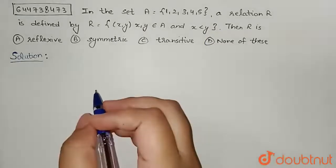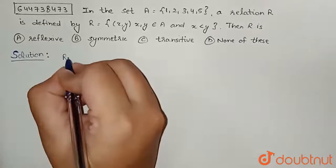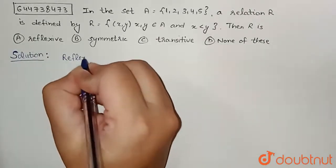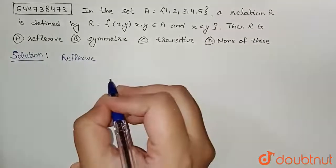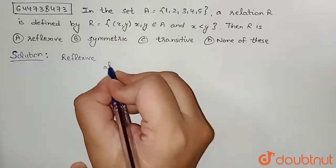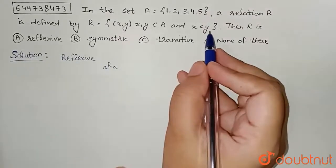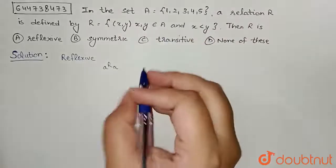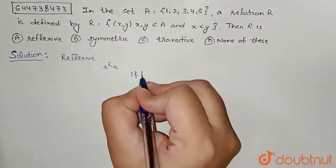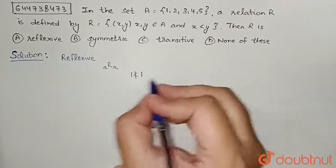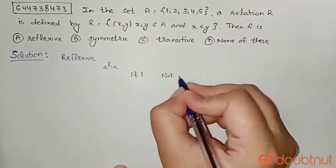So first of all, let's check for the reflexive property. For reflexive property, we have elements which are related to itself, but in this we can see that the condition is x less than y. So if we take 1, then 1 is not less than 1. This implies that it is not reflexive.